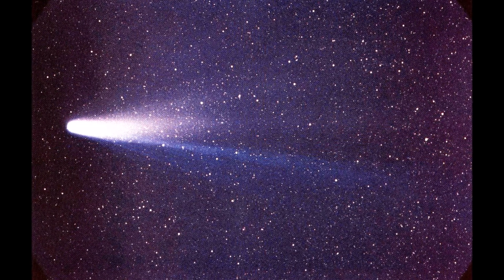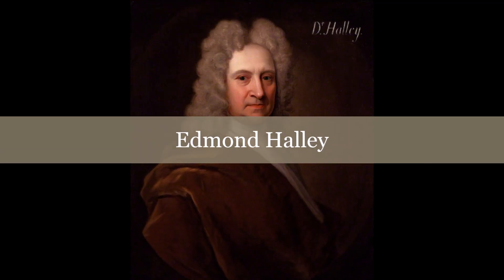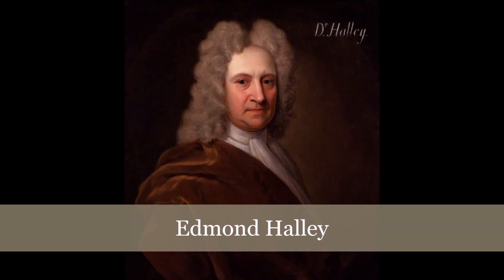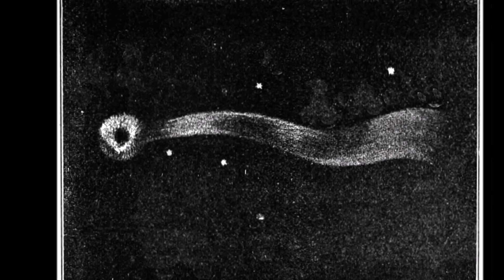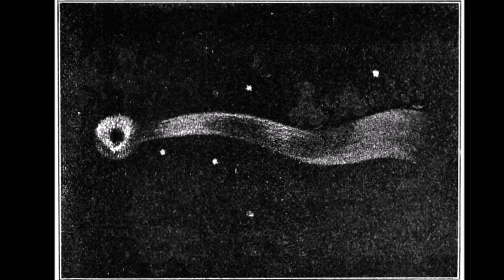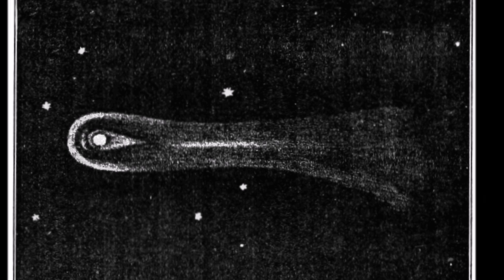Probably the most famous comet in history is Halley's Comet. Halley's Comet is named after Edmund Halley, who realized that the three bright comets seen in 1531, 1607, and 1682 were actually the same comet returning over and over, and successfully predicted that it would be seen again in 1759.